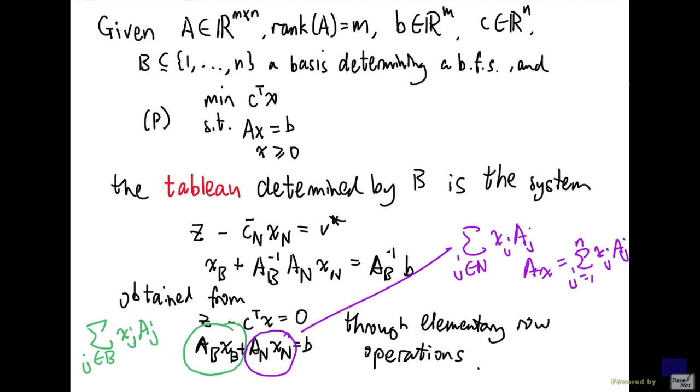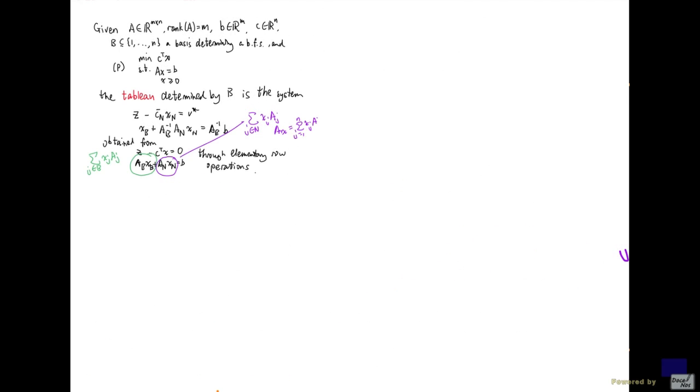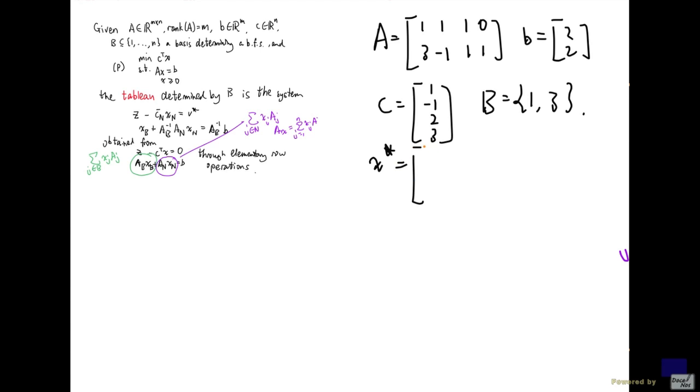So let's look at an example just to make this more clear. And suppose that my problem data are these. And we'll pick the basis B equal to 1, 3. And you can easily see that the basic feasible solution it determines is 0, 0, 2, 0.